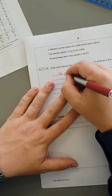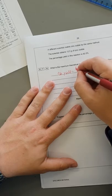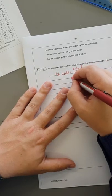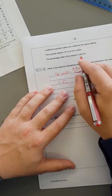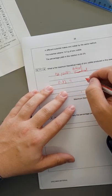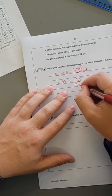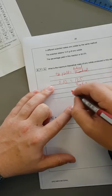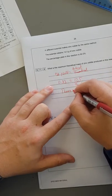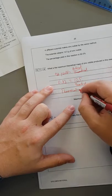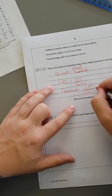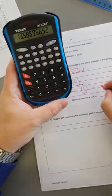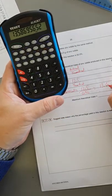So this is a percent yield question. Percent yield equals actual divided by theoretical. So my percent yield is 0.92, 92% as a decimal, equals 12.5 over theoretical. That equals 12.5 divided by 0.92, which equals 13.6 grams.